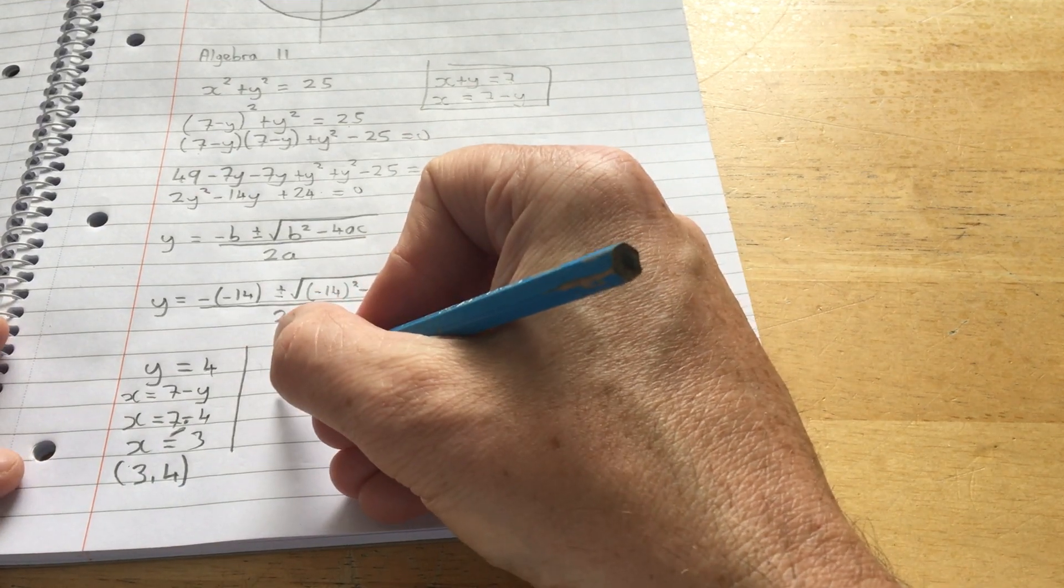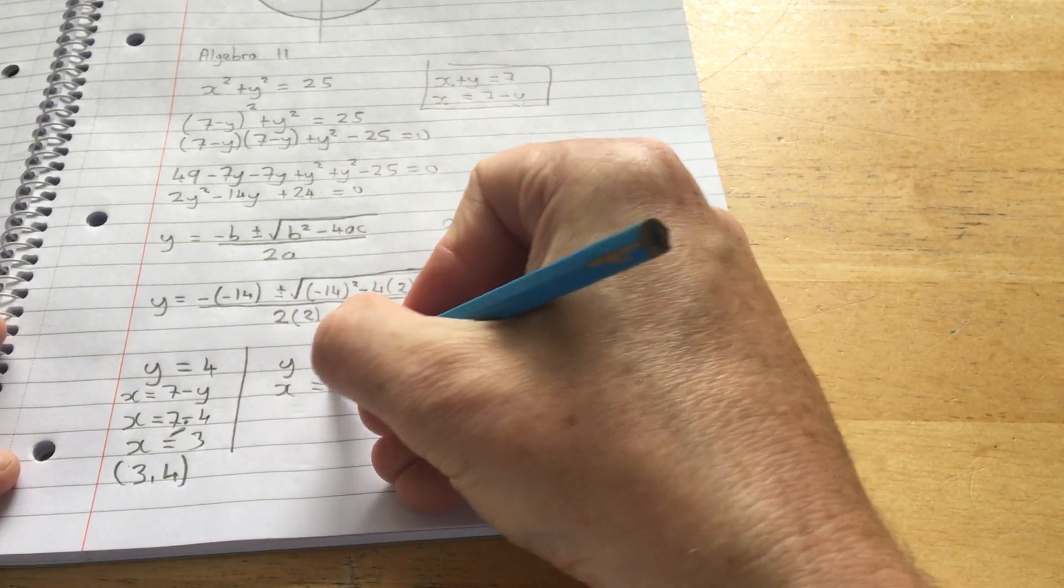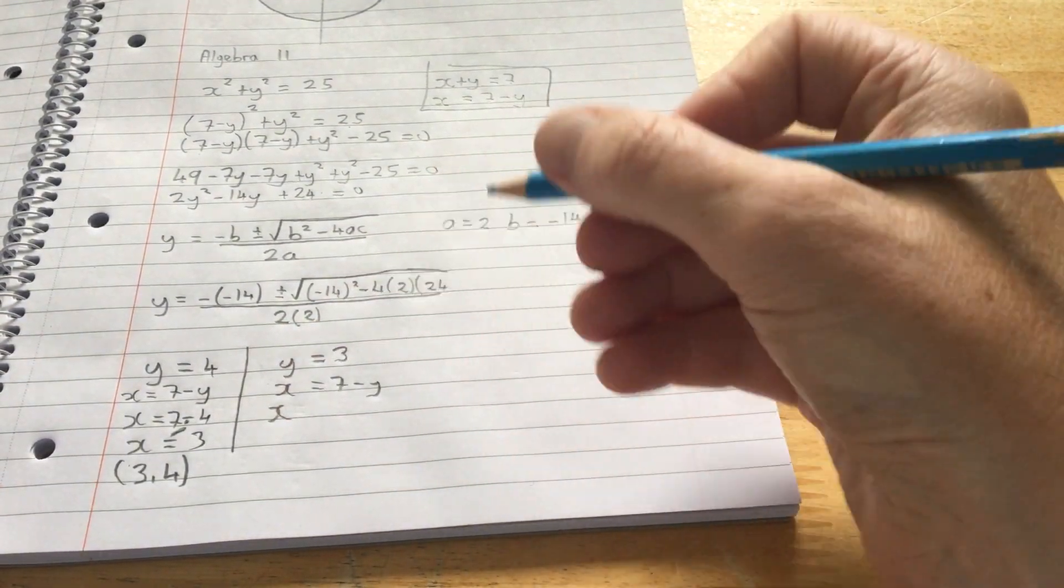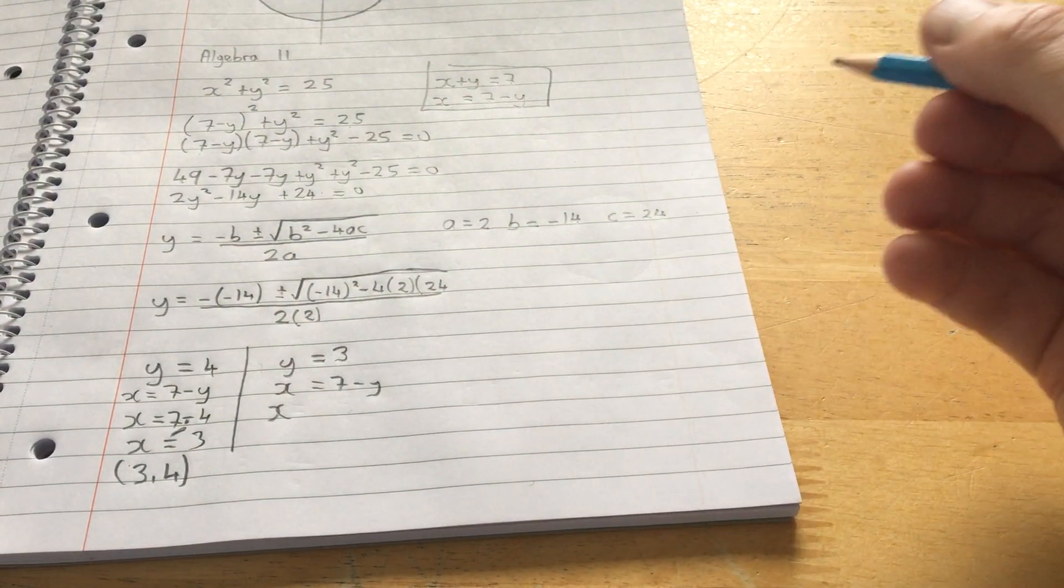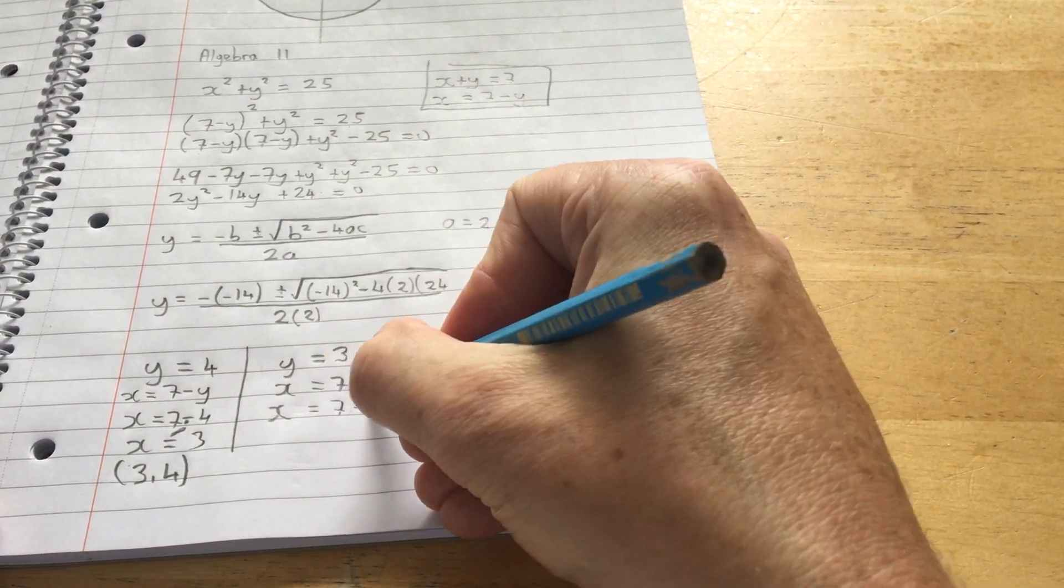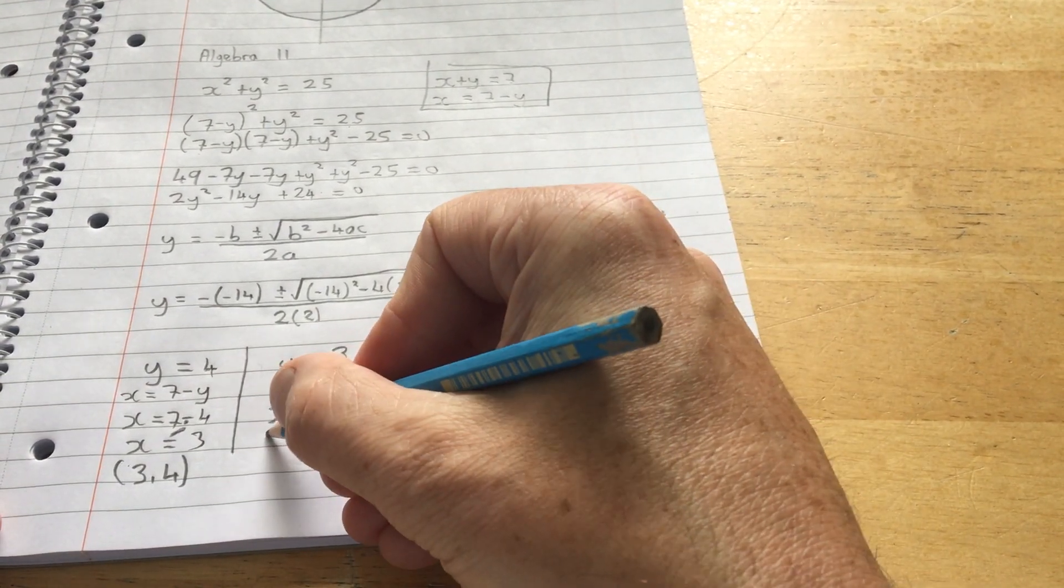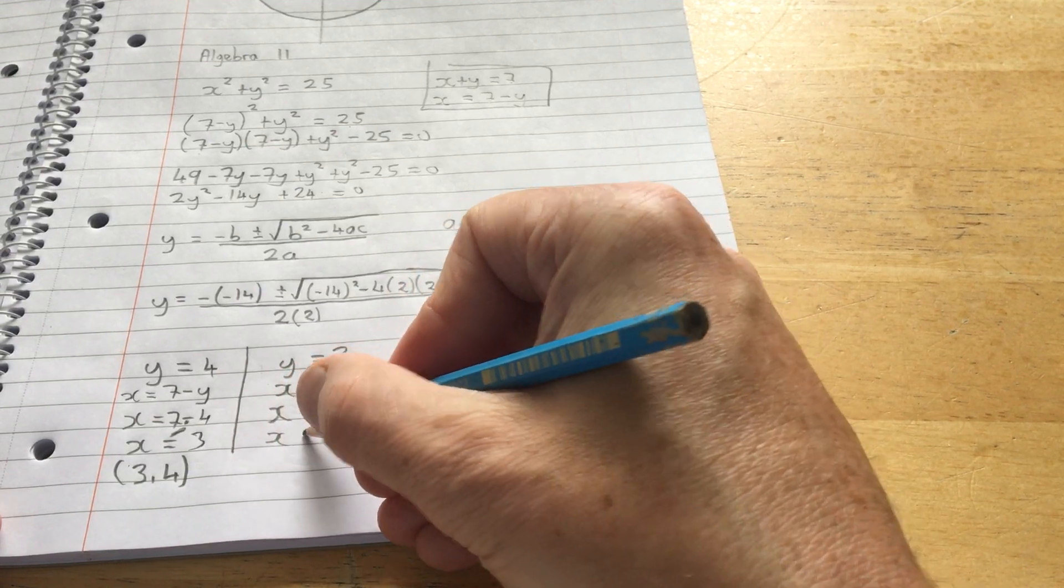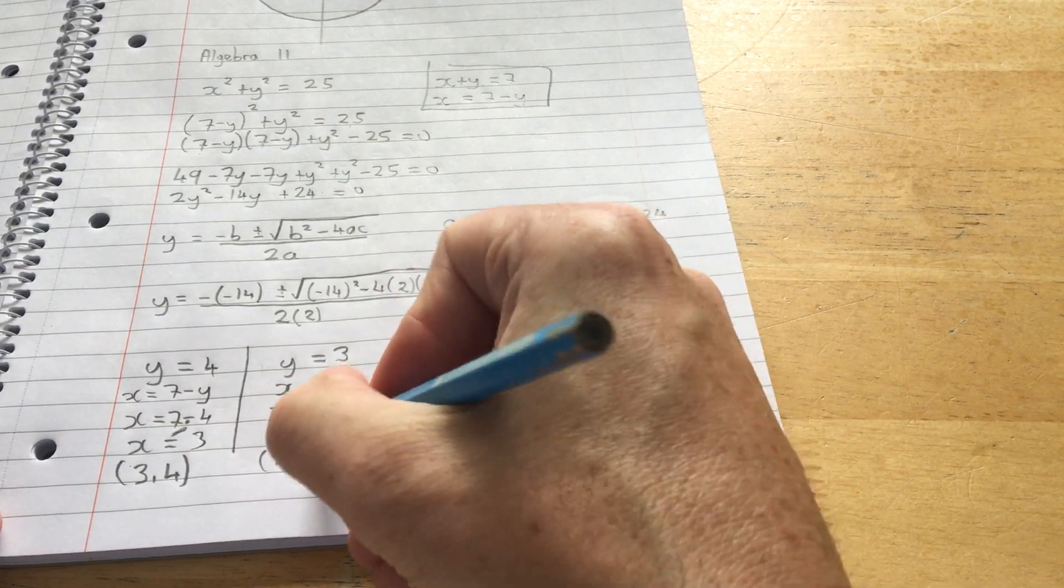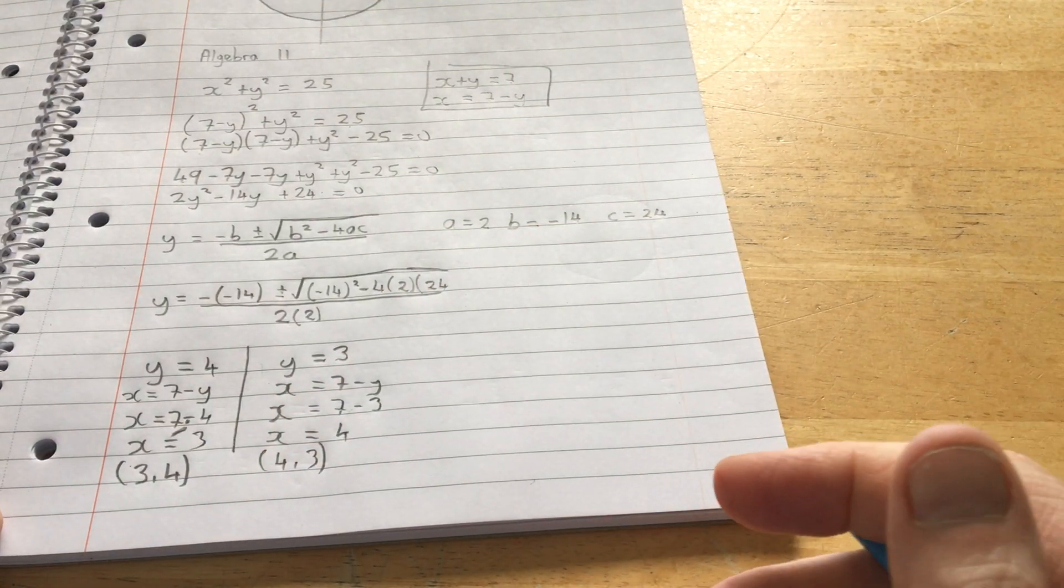When y equals 3, x equals, again, 7 minus y. Remember in a simultaneous equation, when you find the value of x, you have to go then and substitute it in to find the value of y. Well, that's exactly what you do here, except instead of having one value of x or one value of y, you'll have 2. Then x equals 4 when y equals 3. So that's the first example there.